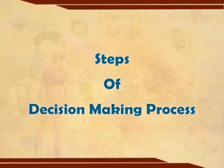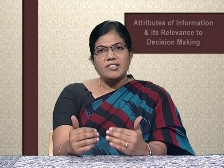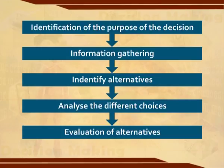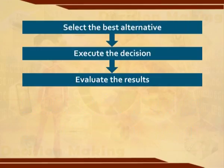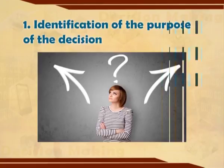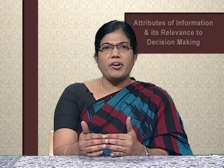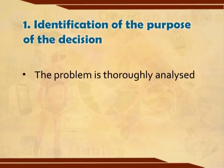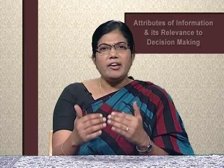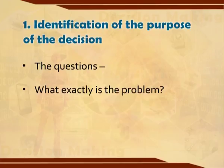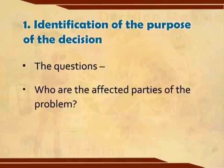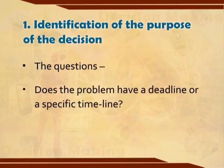We now discuss the different steps of the decision making process. Each step may be supported by different tools and techniques. These are: identification of purpose of the decision, information gathering, identify alternatives, analyze the different choices, evaluation of alternatives, select the best alternative, execute the decision, and evaluate the results. The first step is identification of the purpose of the decision. The problem is thoroughly analyzed. The questions to address are: what exactly is the problem, why should the problem be solved, who are the affected parties, and does the problem have a deadline or specific timeline?